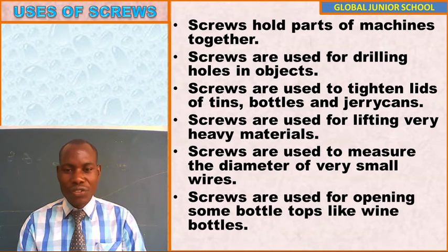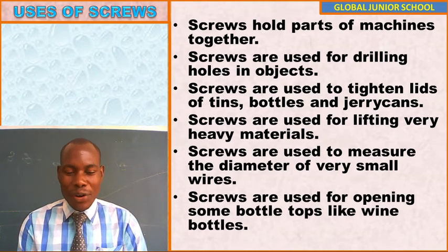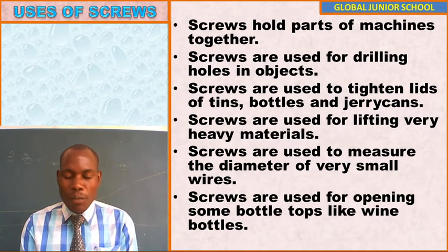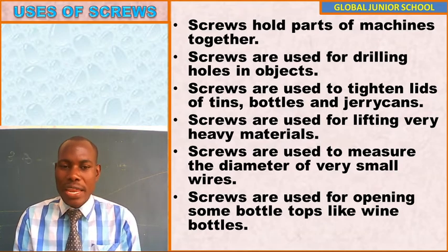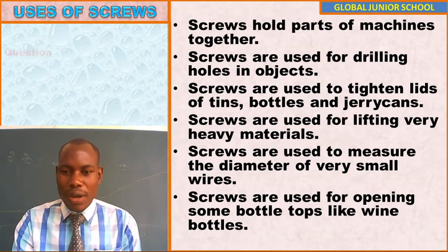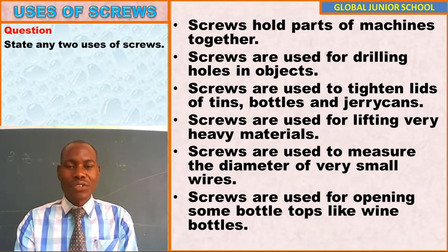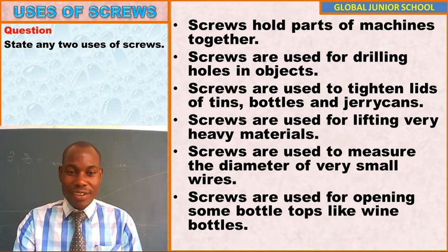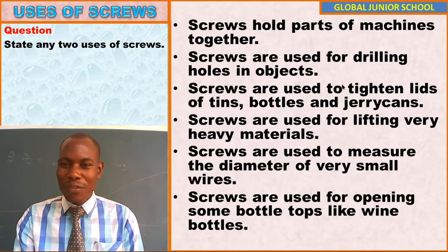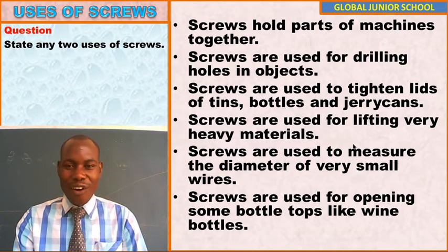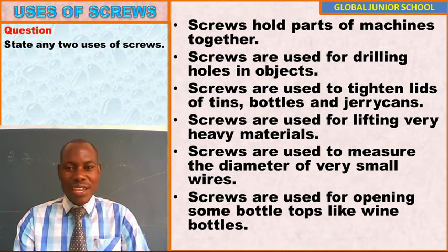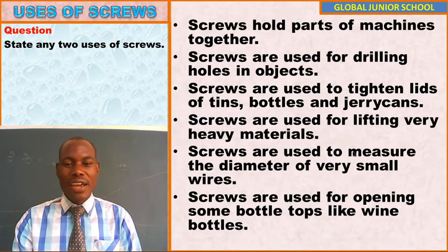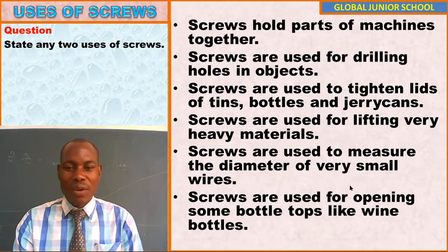Screws are also used for opening some bottle tops, like wine bottles. There is a wine bottle opener which contains a screw in it. So, to summarize the uses of screws: holding parts of machines together, drilling holes in objects, tightening lids of tins and jerry cans, lifting very heavy materials, measuring the diameter of very small wires, and opening some bottle tops like wine bottles.